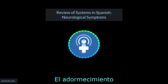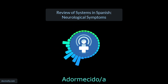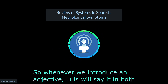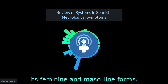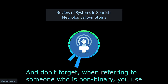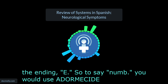Numbness — El adormecimiento, o El entumecimiento. Numb — adormecido, adormecida, o entumecido, entumecida. Whenever we introduce an adjective, Luis will say it in both its feminine and masculine forms. And don't forget, when referring to someone who is non-binary, you use the ending E. So to say numb, you would use adormecide o entumecide.